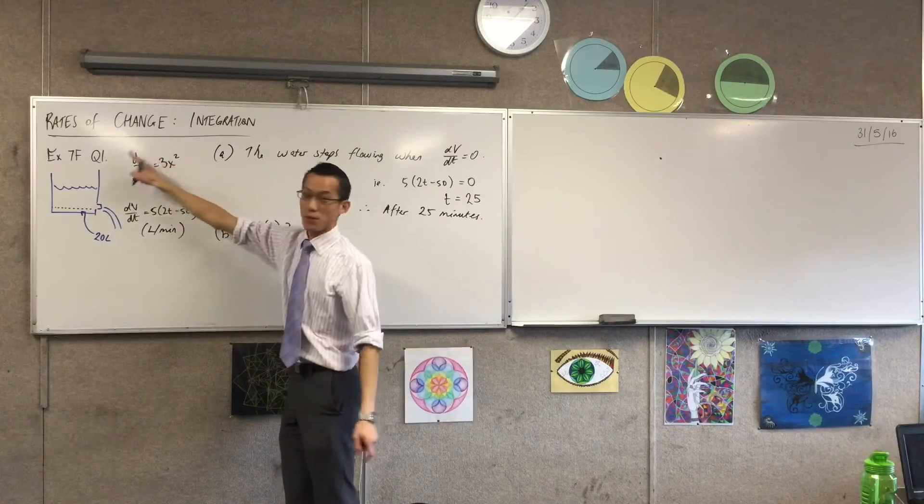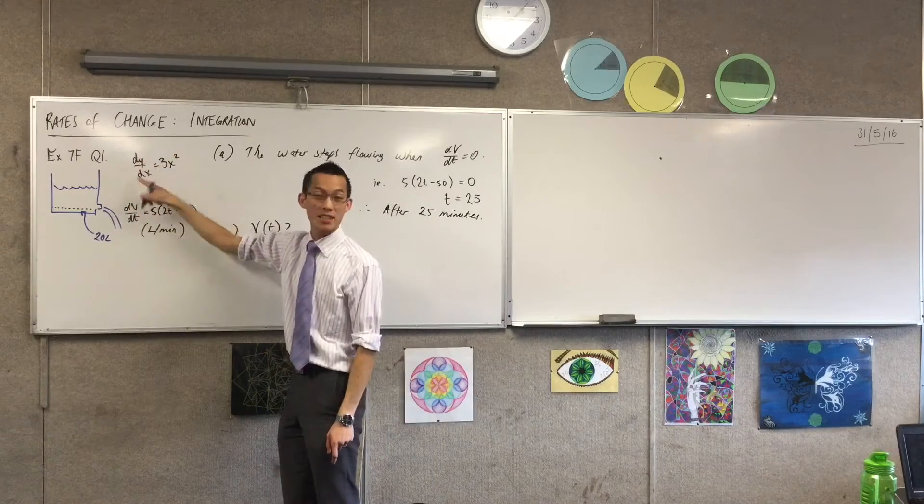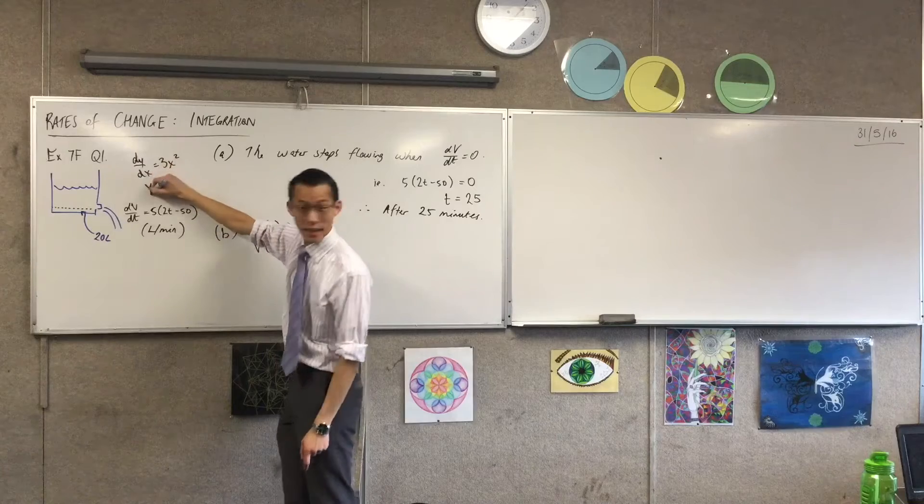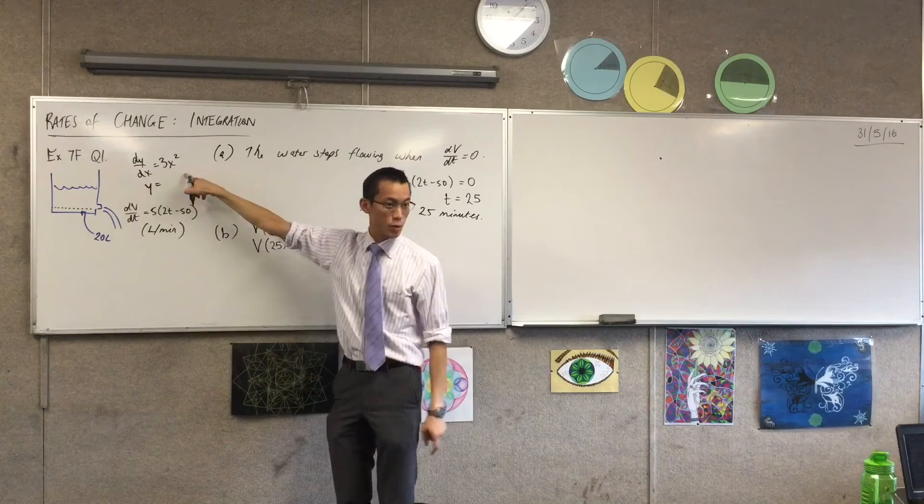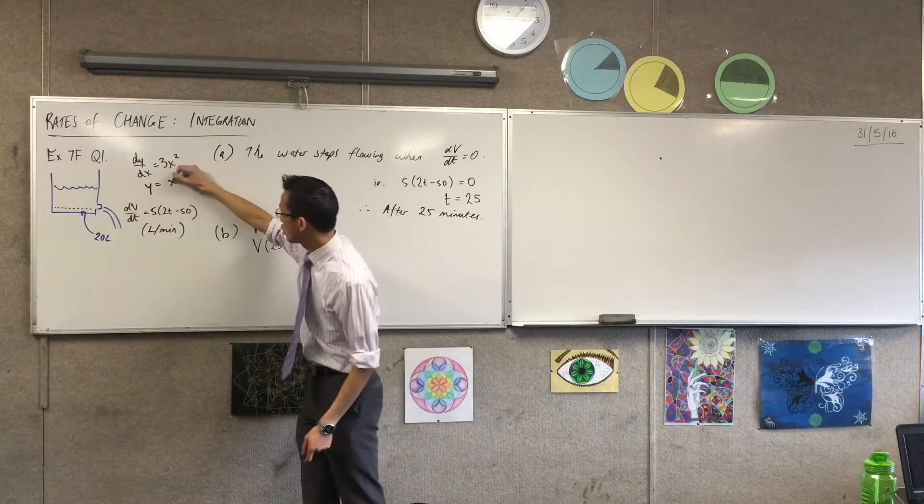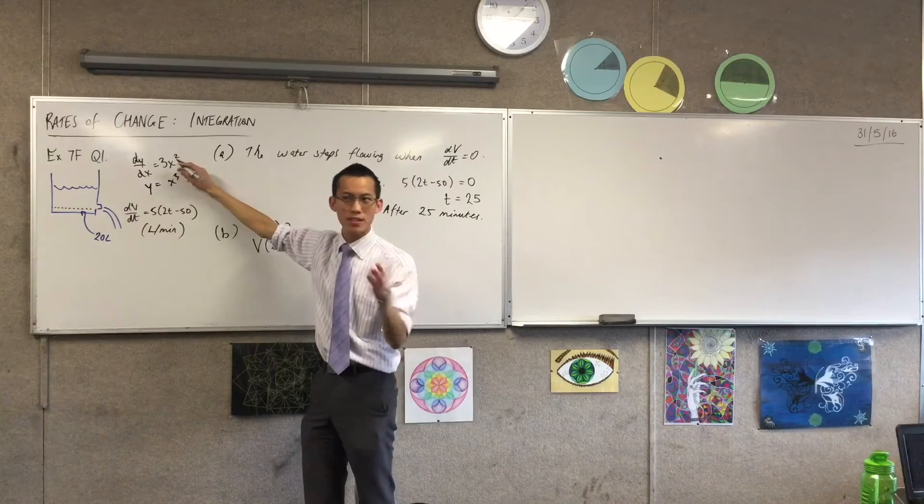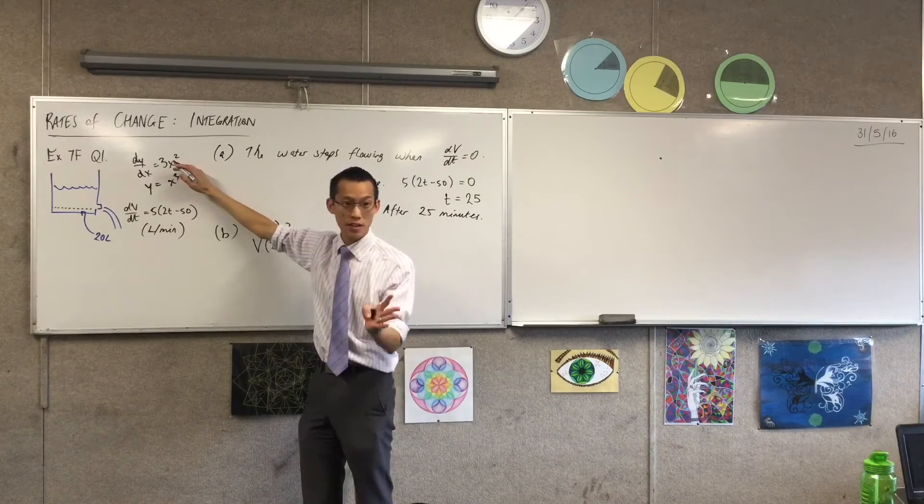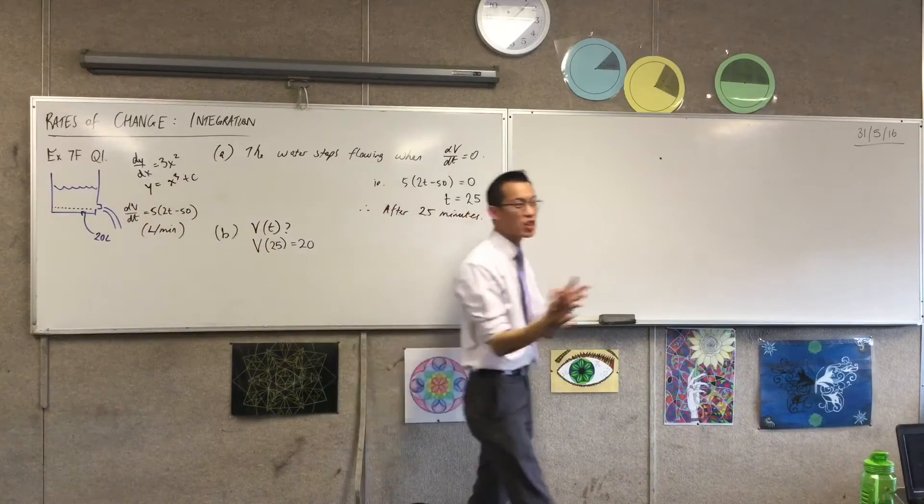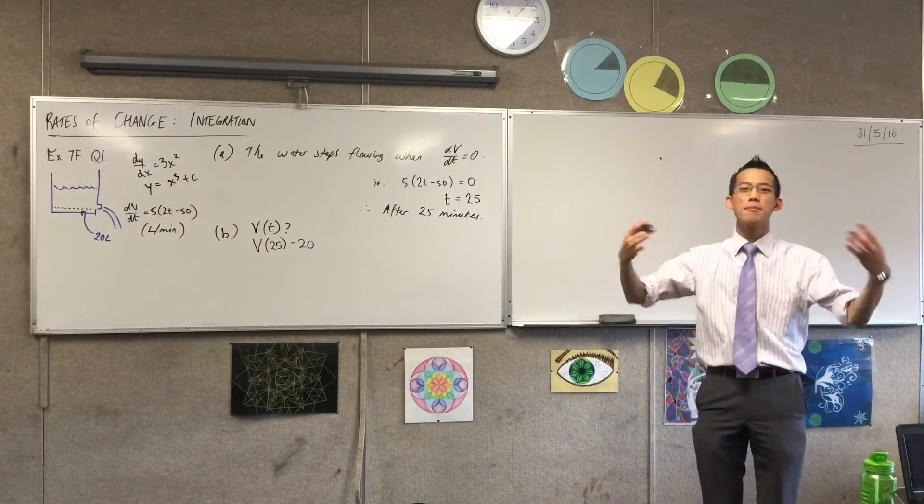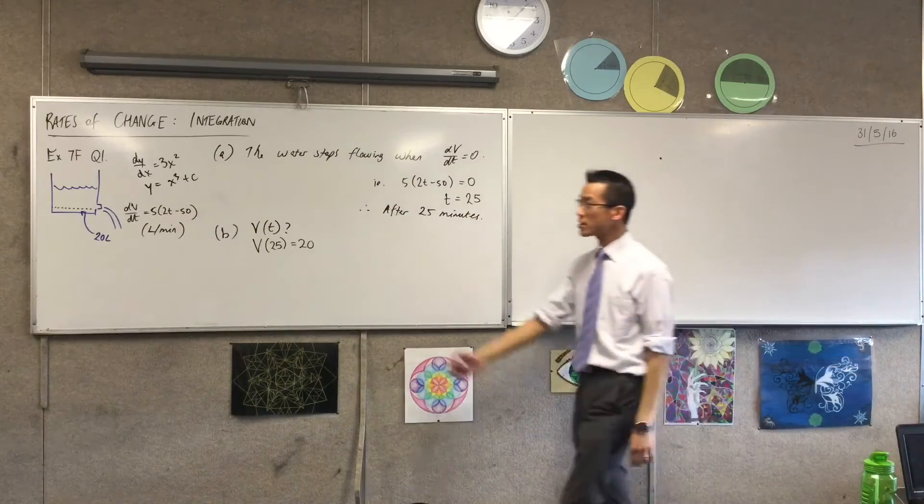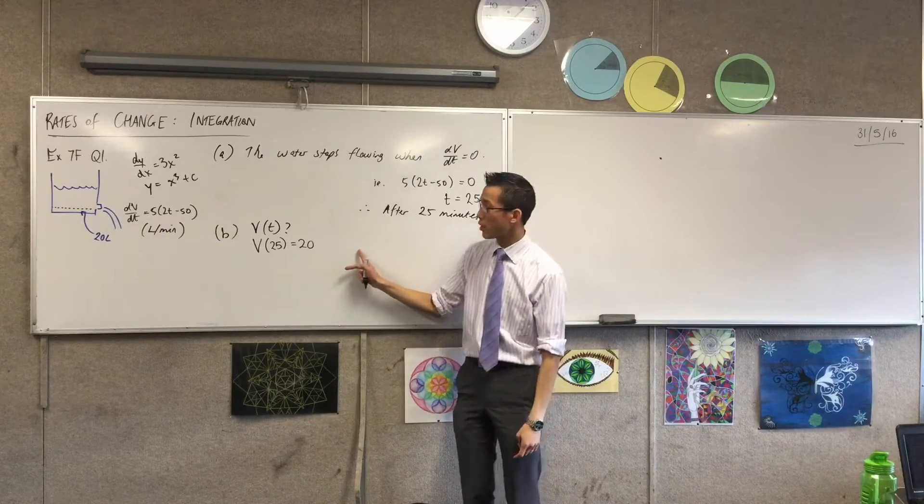So you integrate both sides. On the left-hand side, if you integrate this with respect to X, you're going to get Y, and you integrate this with respect to X, you get X cubed. But because this is not a definite integral, no boundaries, so you don't know which one of the X cubes it came from. There's that whole family of primitives, you remember this? So this is going to come into play when we have a look at this question.